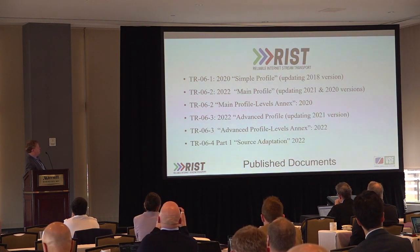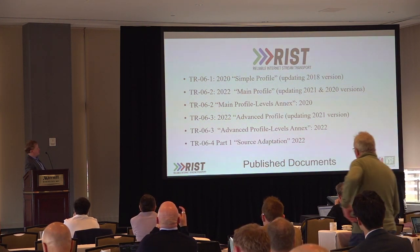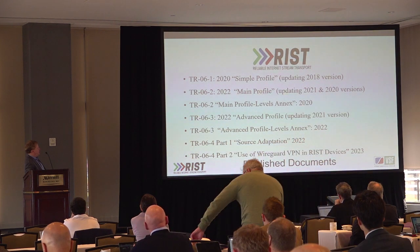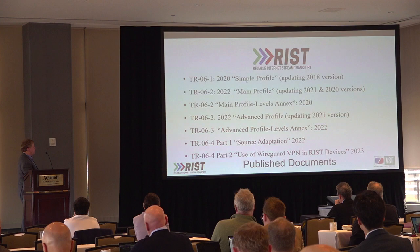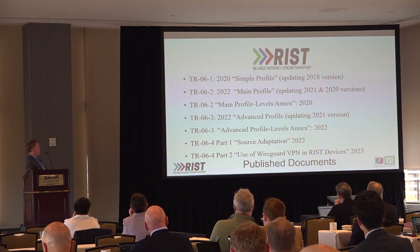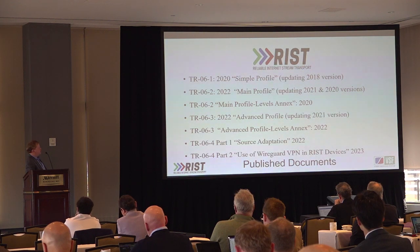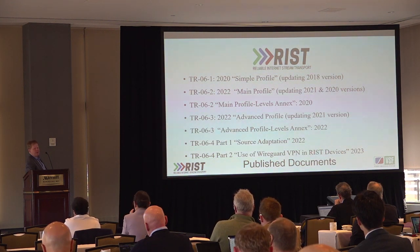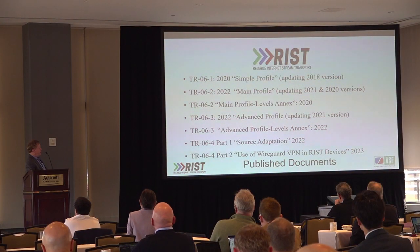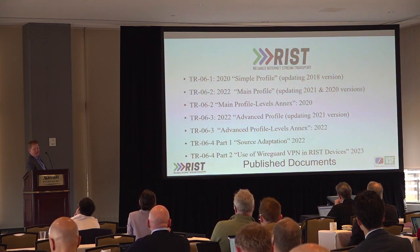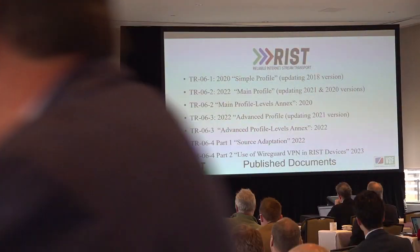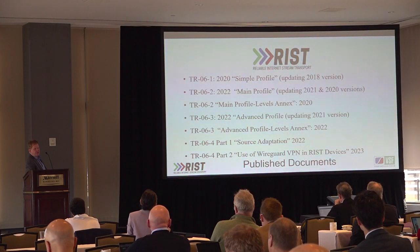Getting into more topical documents: TR 06-4 Part 1 covers source adaptation, and TR 06-4 Part 2 covers the use of WireGuard VPN in RIST devices for additional security. It's a very common off-the-shelf VPN technology. With everything we did in RIST, we tried to take existing pieces of technology and put them together rather than inventing something from scratch.